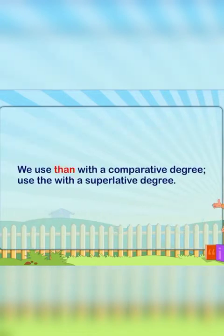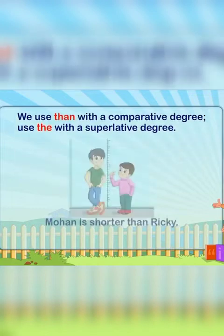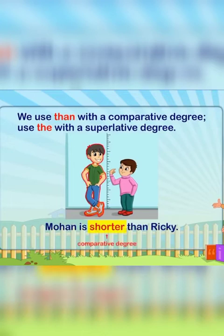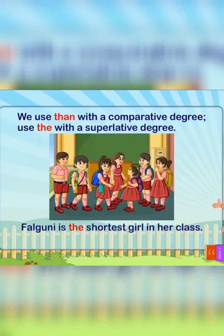We use than with a comparative degree, and the with a superlative degree. For example: Mohan is shorter than Rikki. Falguni is the shortest girl in her class.